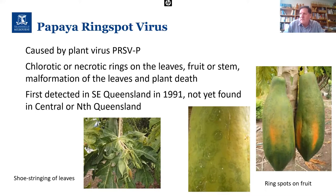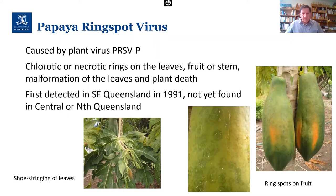Papaya ringspot virus was first detected in Southeast Queensland in 1991, and it's not yet found in Central or North Queensland. It was responsible for nearly wiping out the Hawaiian papaya industry in the 1970s or 80s. There is a control for this: a transgenic papaya using the coat protein gene. However, the transgenic papaya would need to be accepted by the community.